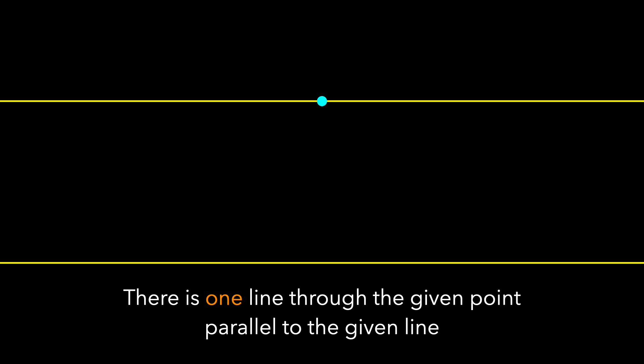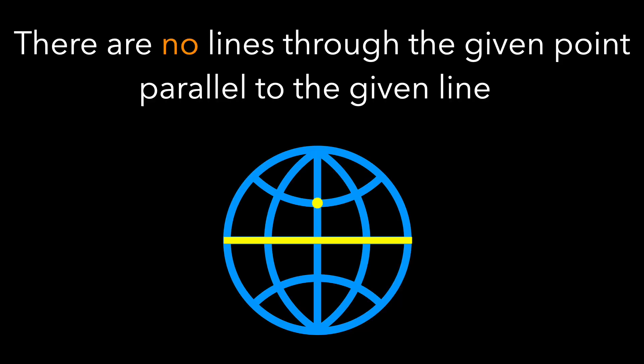What if we lived in a world where there were no lines through the given point parallel to the given line? Those new rules give us a new game, and it just happens to be the game that we see on the surface of the sphere.